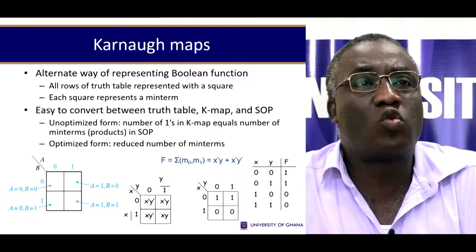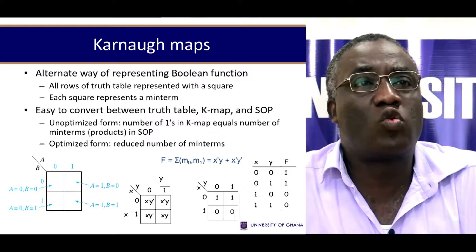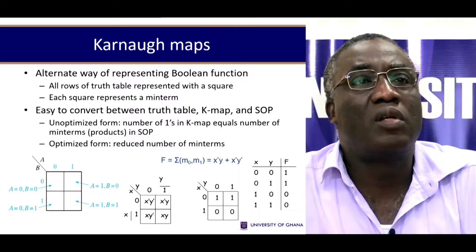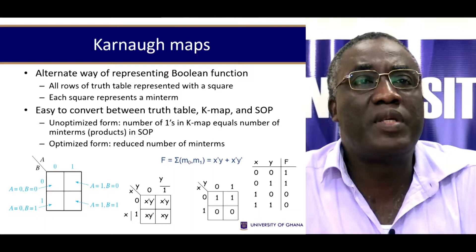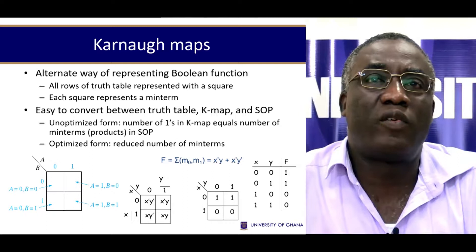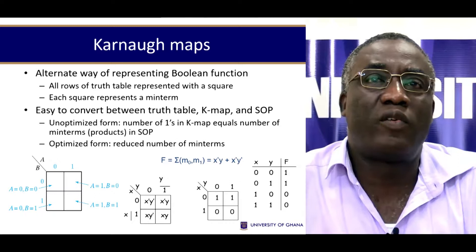So it means that this square here represents what? Zero, zero - a is zero, b is zero. This square here represents a being one and b being zero. This square represents a is zero, b is one, and this square represents a is one and b is one.